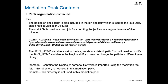The nagios.sh shell script is also included in the bin directory, which executes the Java utility. This script file is used in a cron job for executing the jar files at a regular interval of 5 minutes. The Java execution line in the script is shown in the middle of this slide. Note that the java_home variable is set in the nagios.sh to a default path. You will need to modify the java_home variable in the nagios.sh script file if you want to change the path to a different Java binary. The PA model directory contains the Mediation Pack model, which is imported into Predictive Insights using the mediation tool. The remaining directories are not used by this Mediation Pack.